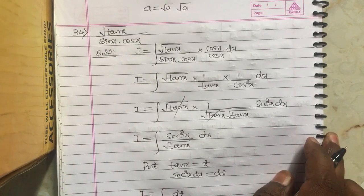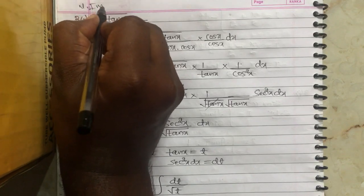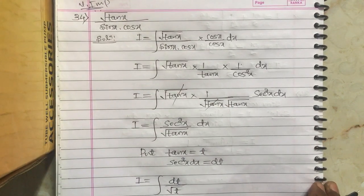This is all about the 34th problem. Mark this as very important for annual exam. This was asked in March 2017 for two marks.